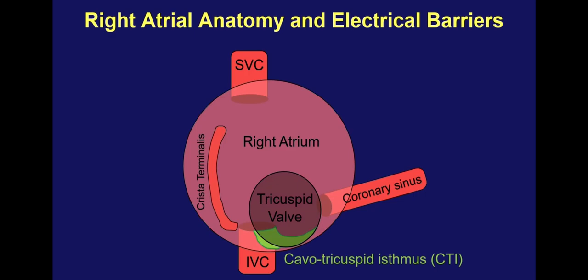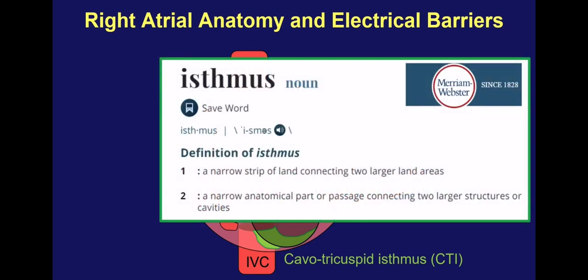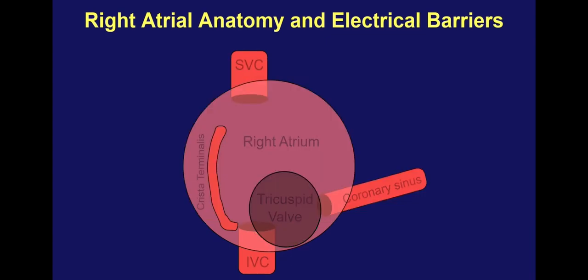The space between the inferior vena cava and the tricuspid valve is known as the cavo-tricuspid isthmus. Just to refresh your memory, an isthmus geographically speaking is a narrow strip of land that connects two larger land areas, but anatomically speaking, an isthmus is a narrow anatomic part that connects two larger structures or cavities. Let's take a moment and pretend that we're floating inside the right atrium and look downward at that cavo-tricuspid isthmus.